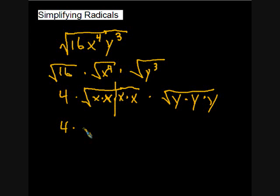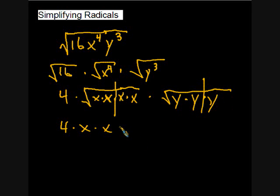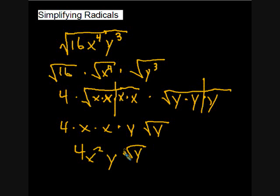We have two pairs of x's, so each pair gives us x, giving x squared total. For the y's, we get a pair giving y, with one y remaining as square root of y. So the final simplified form is four times x squared times y times the square root of y. That's how we apply these rules to simplify radicals containing variables.